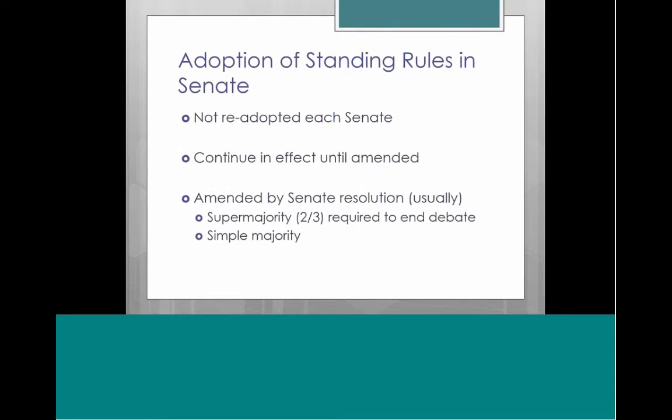In the Senate it's a little different. Since the Senate considers itself a continuing body — unlike the House which turns over every election — they don't readopt new rules each time. The rules of the Senate continue to be in effect until amended. In terms of amending the Senate rules, they often do it by Senate resolution, but unlike the House which requires just a simple majority, the Senate process is more complex.